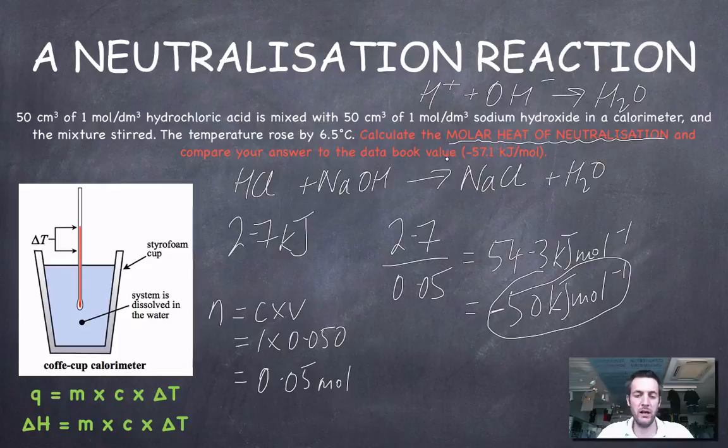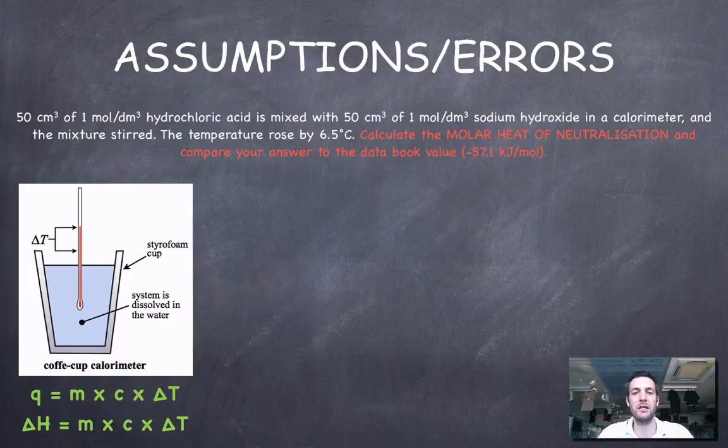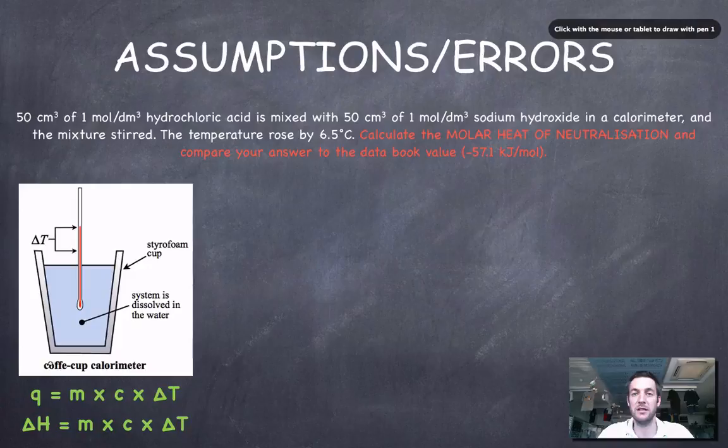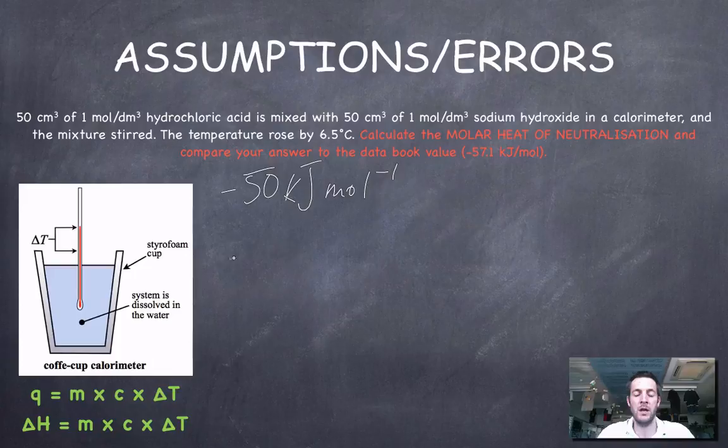The last thing we have to do now is compare that value with our minus 57.1 kilojoules per mole, which comes from the data book. In other words, this is the accepted value. So let's think about what assumptions or errors we might have made. There might have been some heat loss here. But bear in mind, this is quite well insulated, certainly a lot better insulated than the can was. And you might notice that our minus 50 kilojoules per mole is quite a lot closer to this data book value than the value was in the last question we did in the previous film.